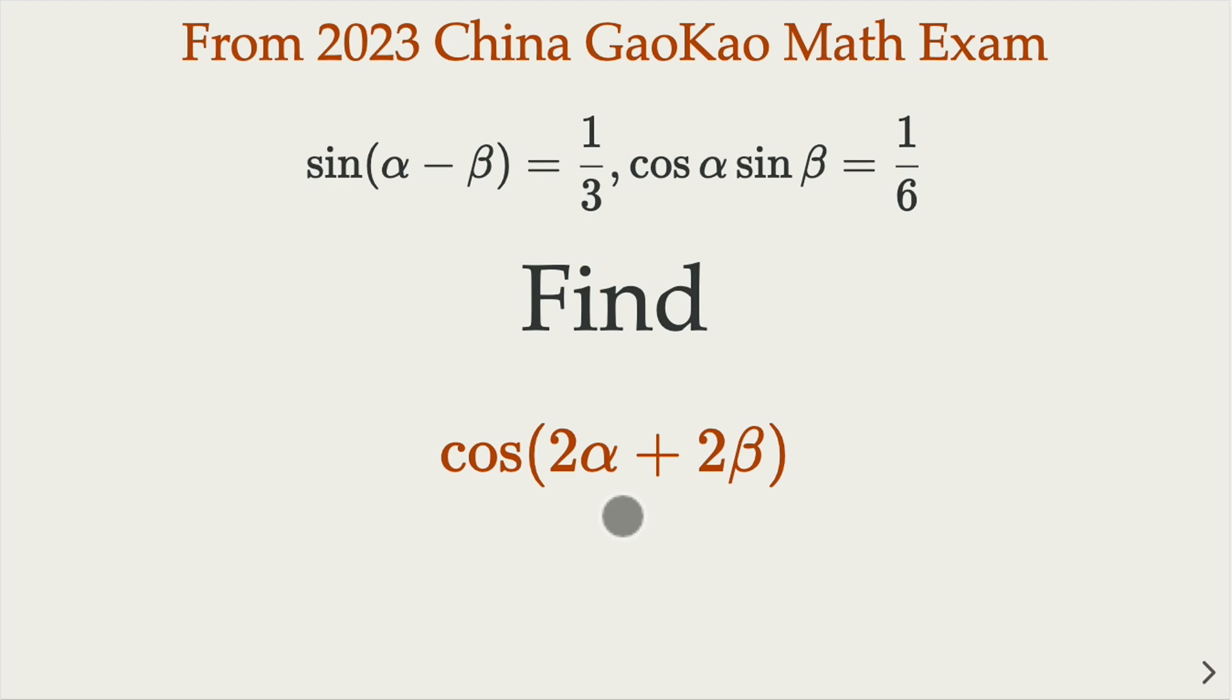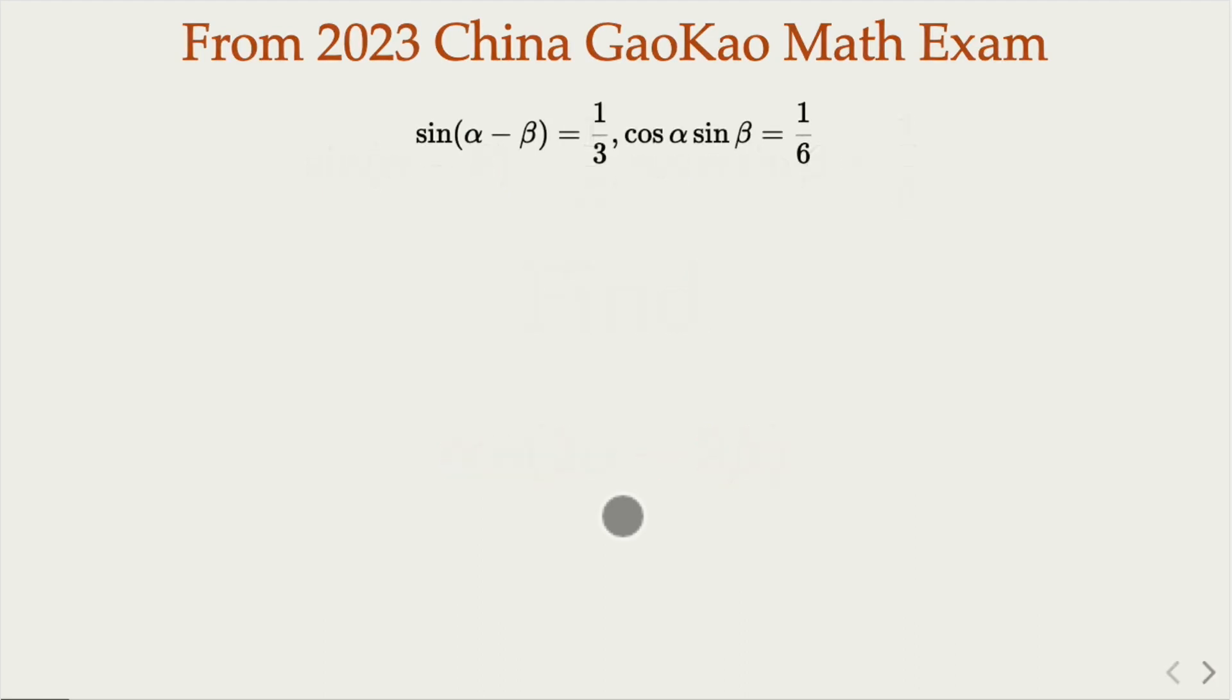We need to know the basic trig identity for sin(α - β), that's equal to sin α cos β minus cos α sin β. Plugging the value here 1/6, we get sin α cos β equals 1/2.